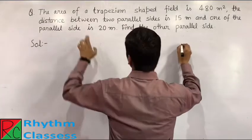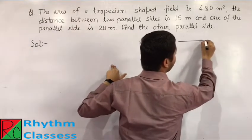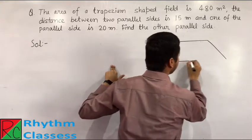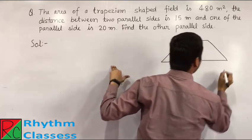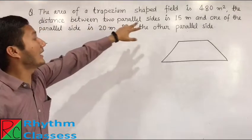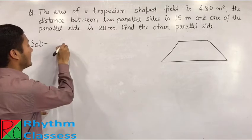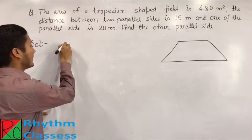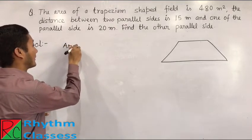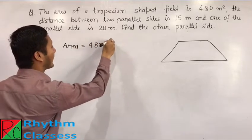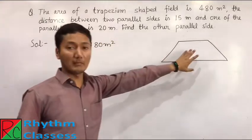then it will be like this is a trapezium shape. Trapezium shape means this will be like this. This is a trapezium in which we have the area of trapezium is 480 meter square. That means the question is given as area is equal to 480 meter square.